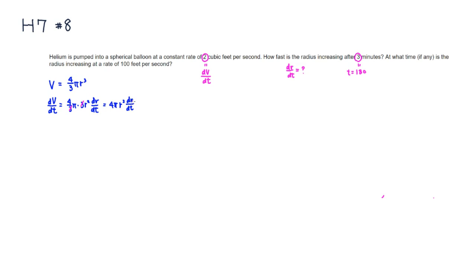We want to find dr/dt. We know that dV/dt is constant at 2. We can solve this equation for dr/dt by dividing through by 4πR², and we simply get dr/dt = 1 over 2πR².